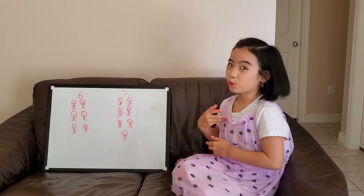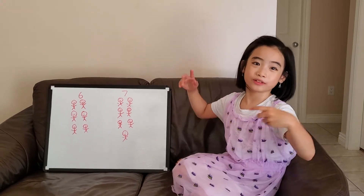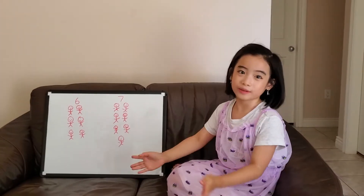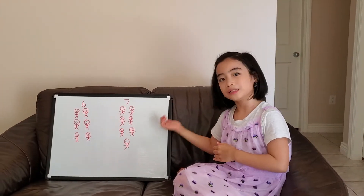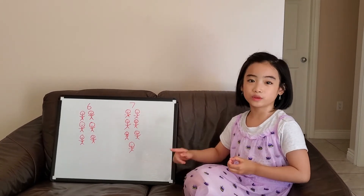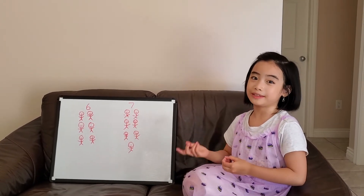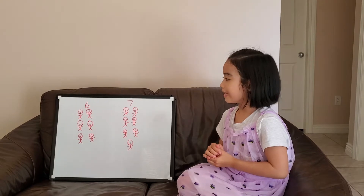For even numbers, you can always group them into a pair, but for odd numbers, one extra will always be there.